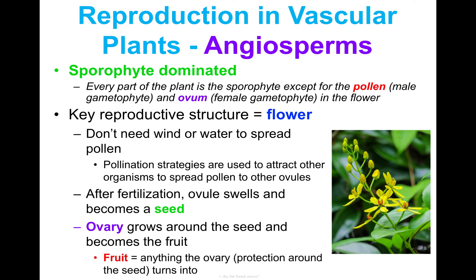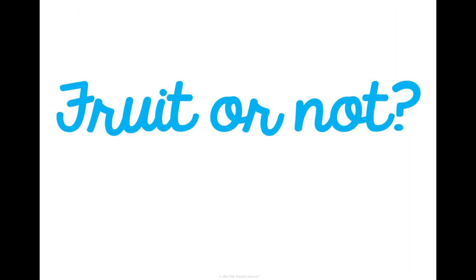Fruit is anything the ovary turns into, and remember the ovary is that protection around the seed. It's really important to understand that definition because the botanical definition of fruit is much different from our grocery store definition of a fruit. To see if you really understand that, we're going to play a little game called 'Fruit or Not.'